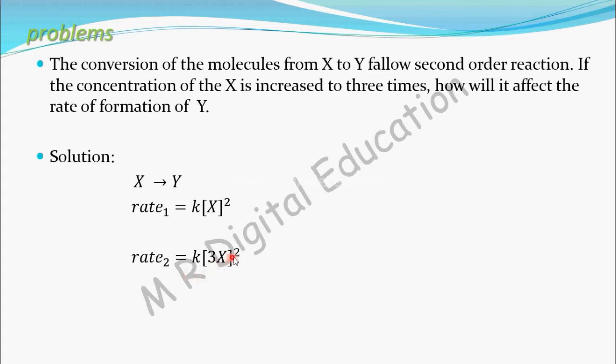Take this 3 outside. 3 to the power 2, that is, 3 square equals 9. Keep all this same as it is: K and K, concentration of X to the power 2. Now, compare these two equations.